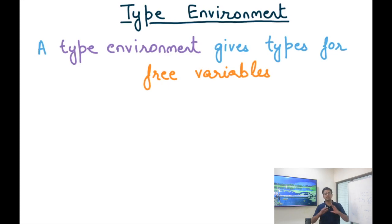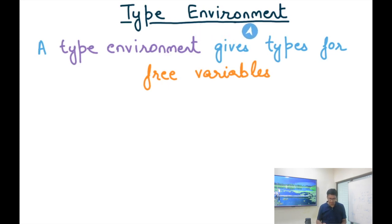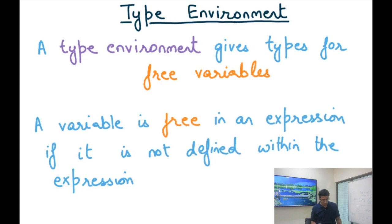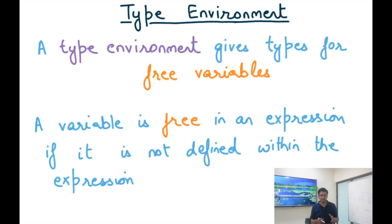We need some kind of environment — a type environment — based on which we can assign a type to a variable like x. The type environment gives types for free variables. A variable is free in an expression if it is not defined within the expression. For example, the expression x doesn't contain a definition of x — it's just a use of x — so x is a free variable there.